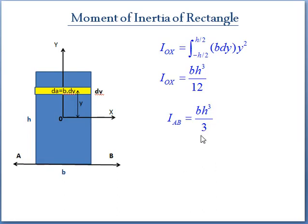And from the parallel axis theorem, we can also get moment of inertia about the base as BH cube by 3. You can see the moment of inertia of base is more than the centroidal axis because the farther you move, the moment of inertia is going to increase.